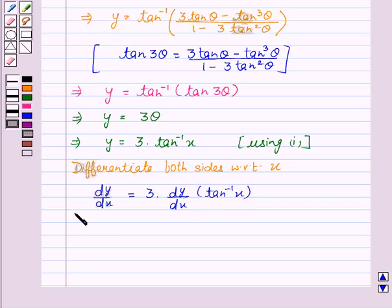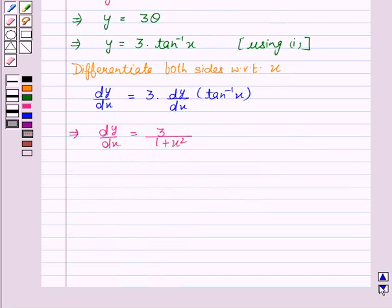This implies dy by dx equal to 3 upon 1 plus x squared. Therefore, dy by dx equal to 3 upon 1 plus x squared.